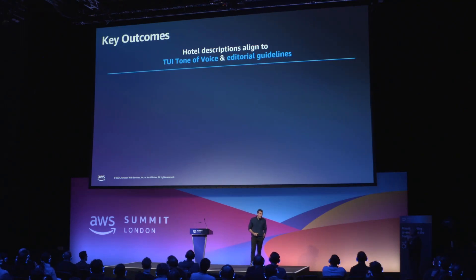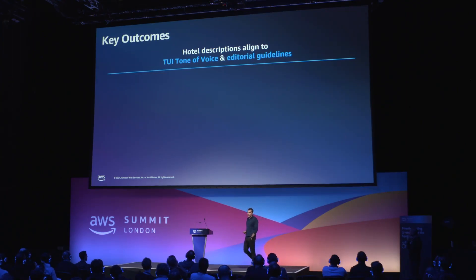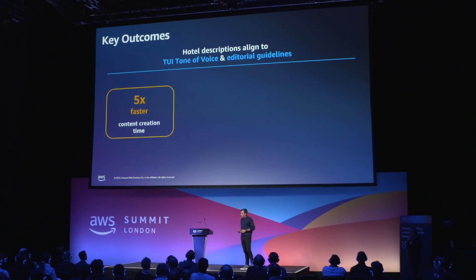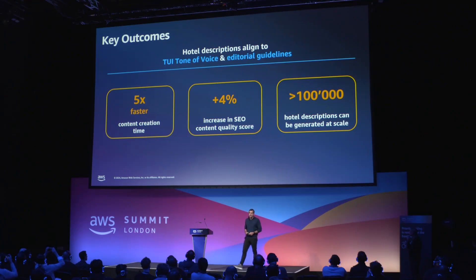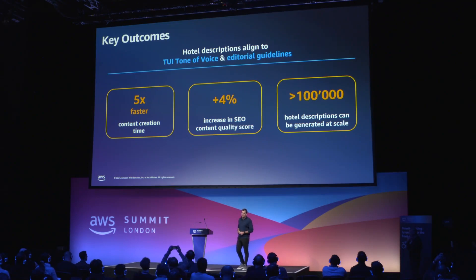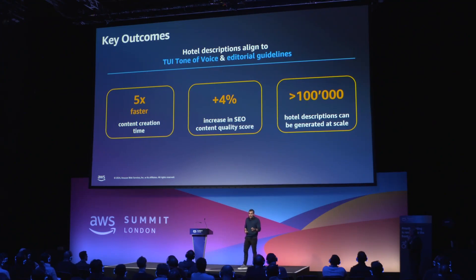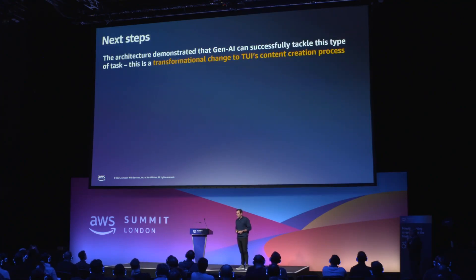So what are the key outcomes? It's safe to say that the TUI tone of voice engine can generate well-written hotel descriptions that align with the TUI tone of voice and editorial guidelines. We are able to generate content five times faster, we increased the SEO score by 4%, and we are able to scale — we can generate more than 100,000 hotel descriptions in a matter of hours — while keeping the same quality and consistency.